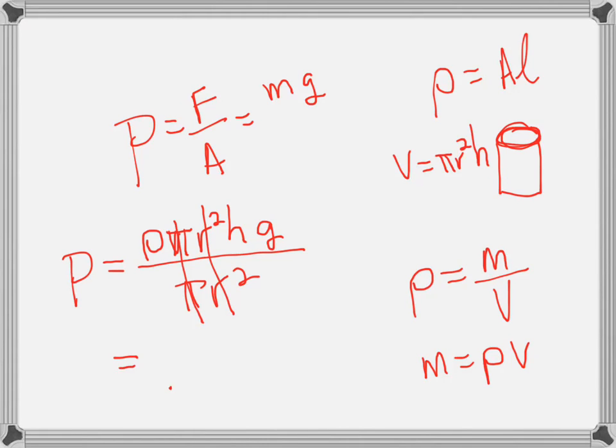So you just get the density times the height times gravity. Of course, that would be in Pascals, and you need to put that in kPa for your final answer. Next problem.